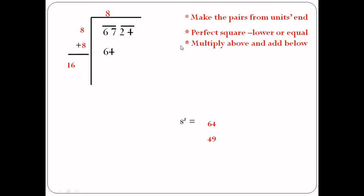To recap: Step 1 — make pairs from units end, giving us 67 and 24. Step 2 — perfect square lower or equal, giving us 64, which is closer to 67. Step 3 — multiply above and add below: 8 multiplied by 8 gives product 64, and 8 plus 8 gives sum 16.